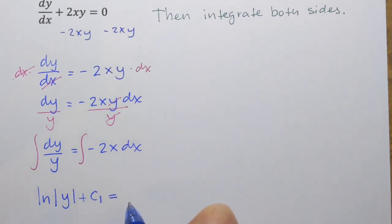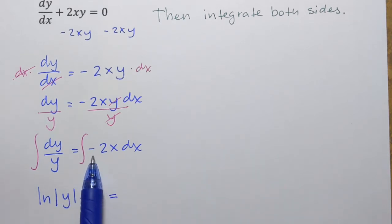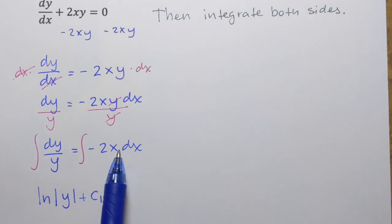And what we're going to see in a little bit is that, in fact, we can combine those constants and just write plus c only on one side. But I'll show you. Now, on the right hand side, we have negative 2x dx.